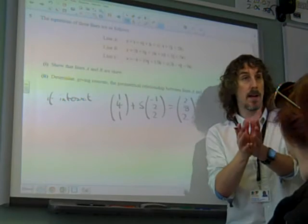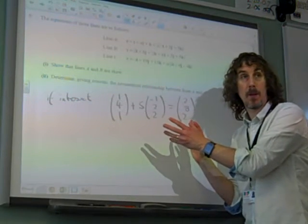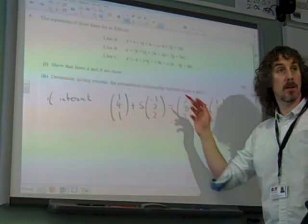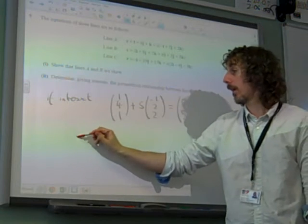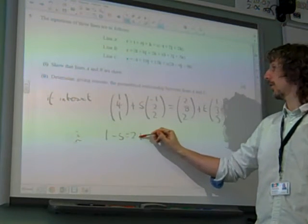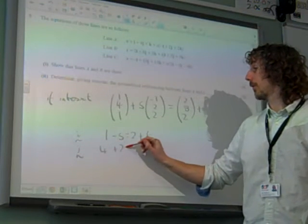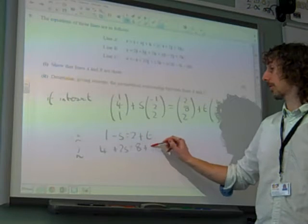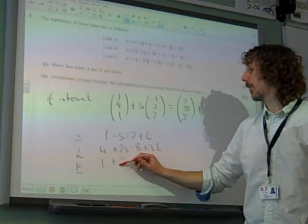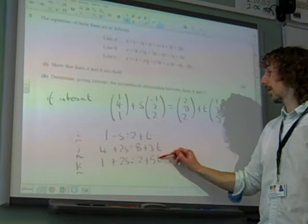Remember what we're doing? We're saying if they intersect and this equation is true, if we get a contradiction it means that they're skew. So we compare the I, J and K coefficients of each side. So if we look at the I's, we've got 1 minus S is 2 plus T. If we look at the J's, we've got 4 plus 2S is 8 plus 3T. And K, we have 1 plus 2S is 2 plus 5T.